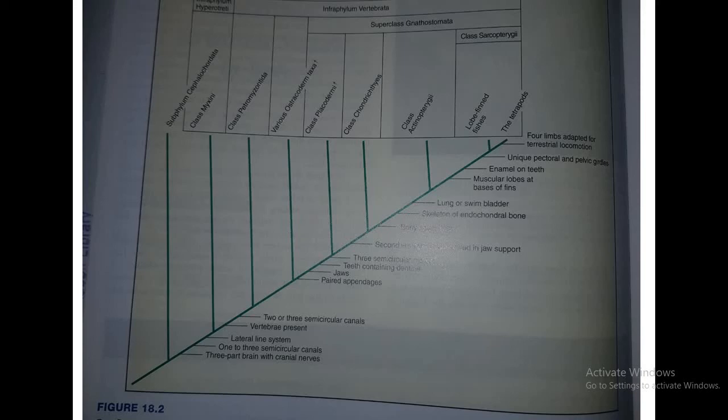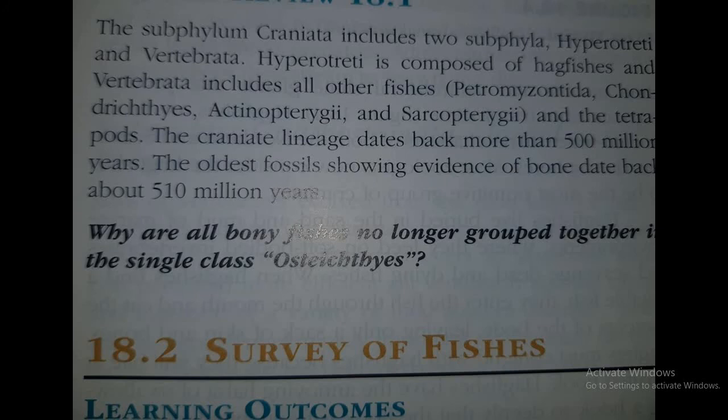If you want to summarize information related to Vertebrata, this is the conclusion: subphylum Craniata includes two subphyla, Hyperotreti and Vertebrata.